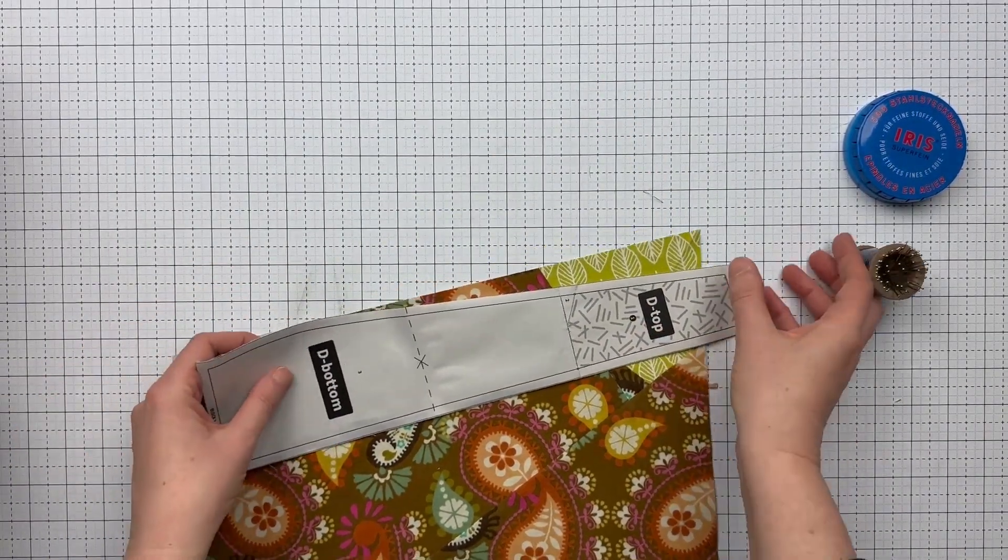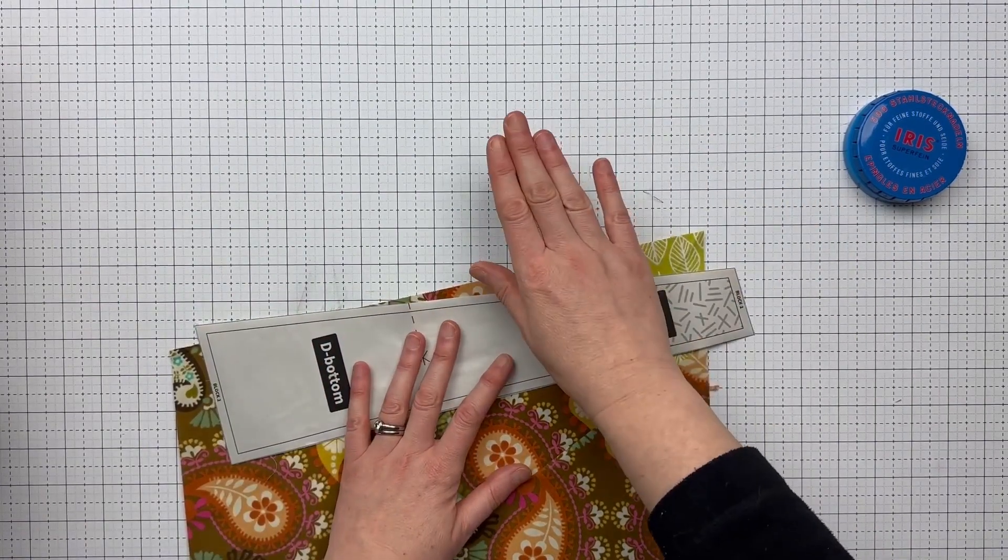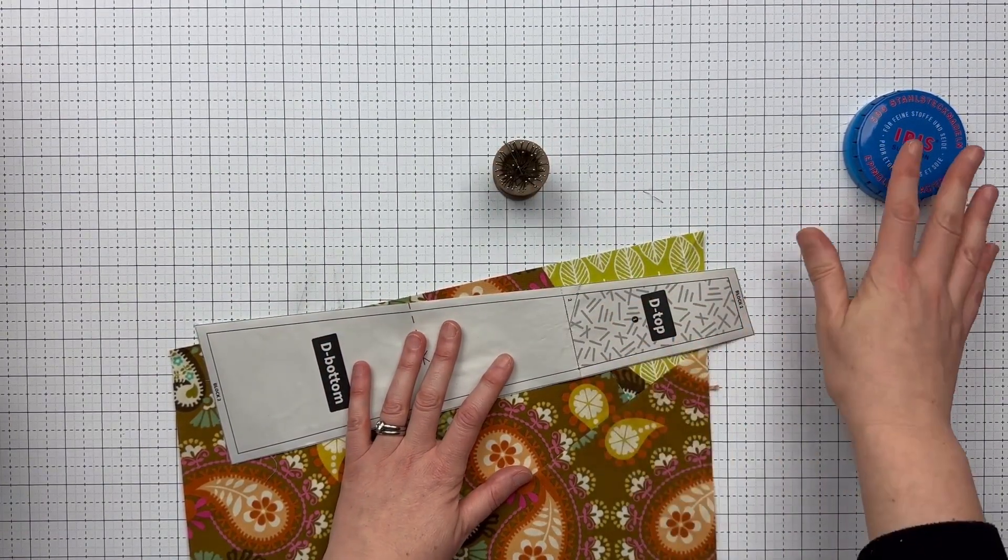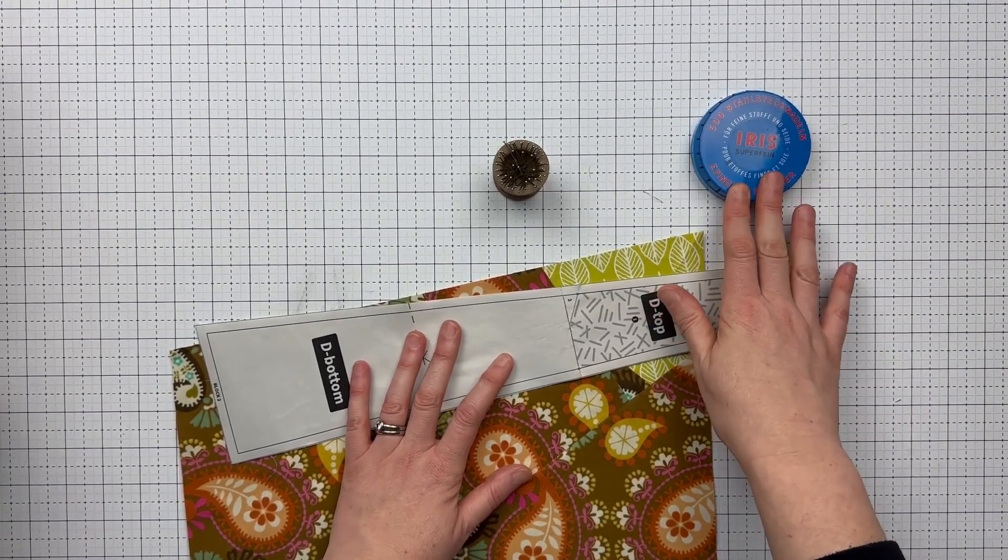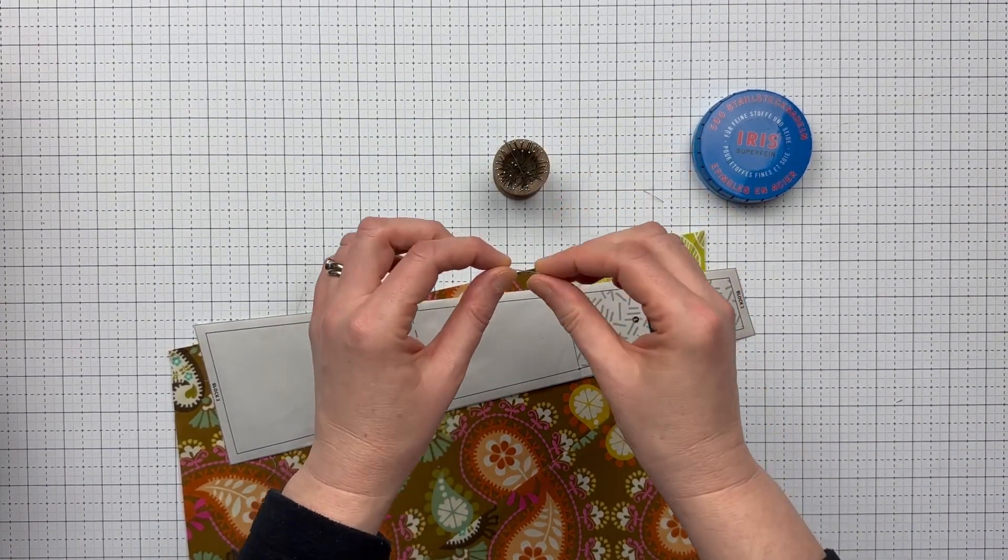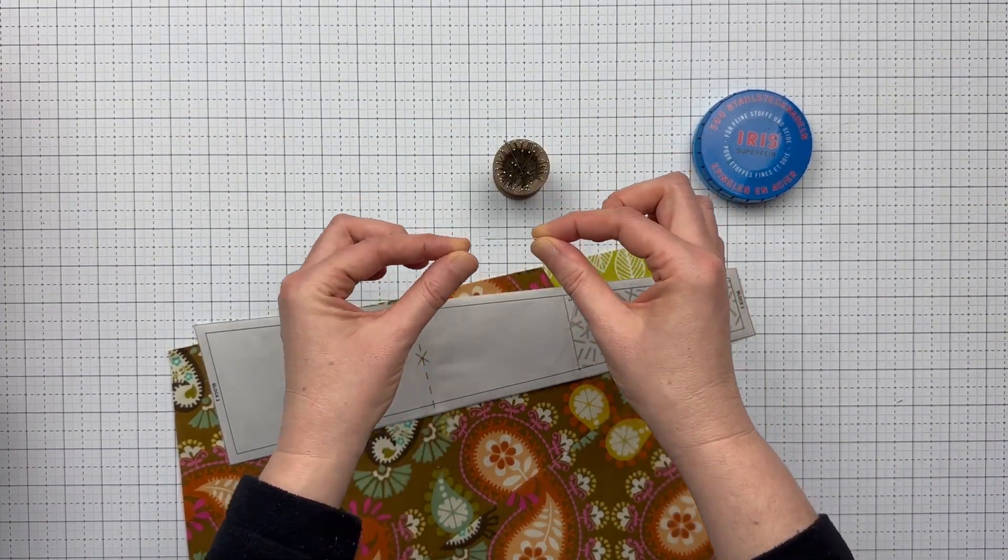And then I use super thin pins to align the dots. The thinner the pin, the more accurate the results. And I really like this brand of pins, Iris Superfine, because while they're thin, they don't bend easily. I'm going to put a link to them below.